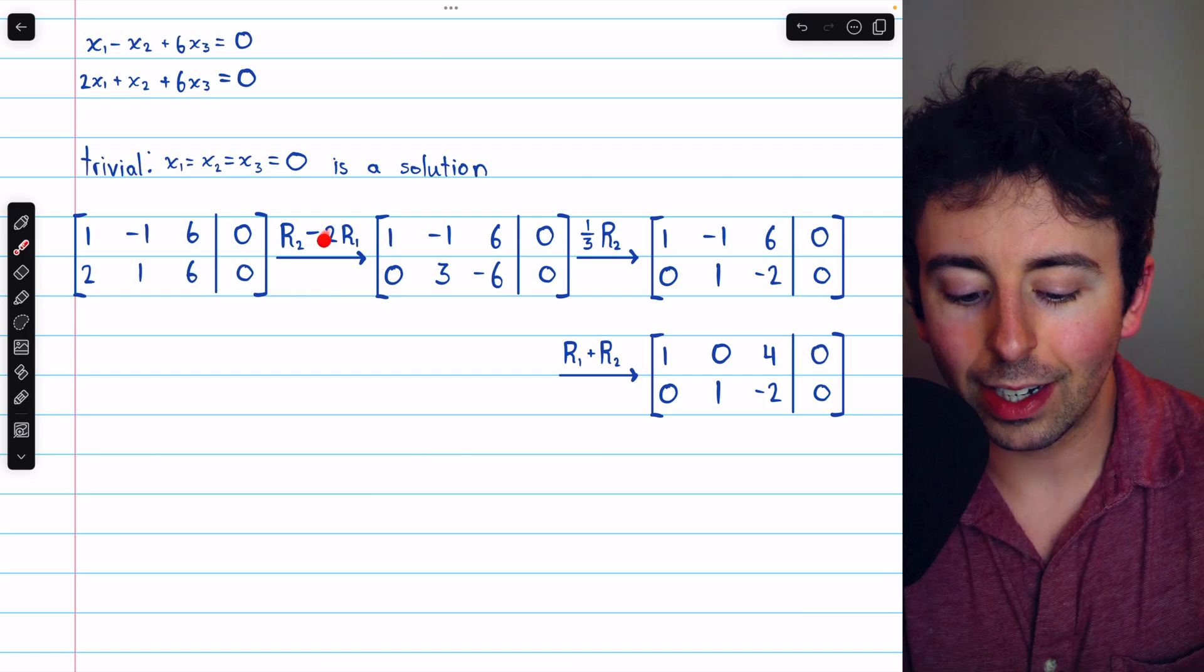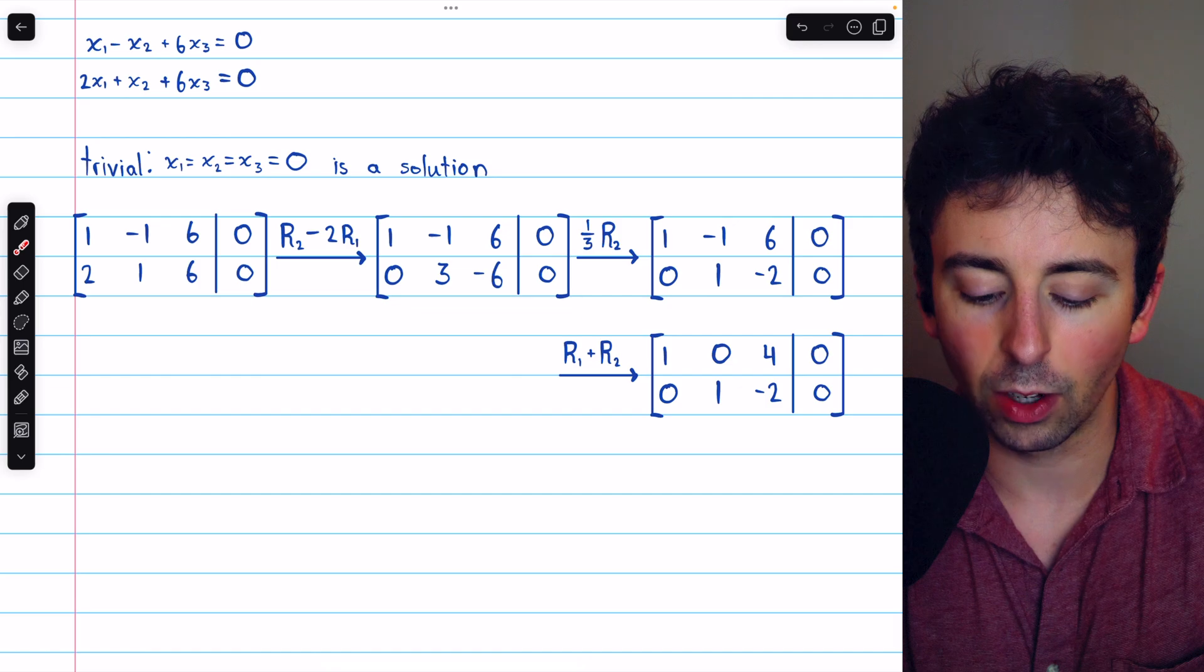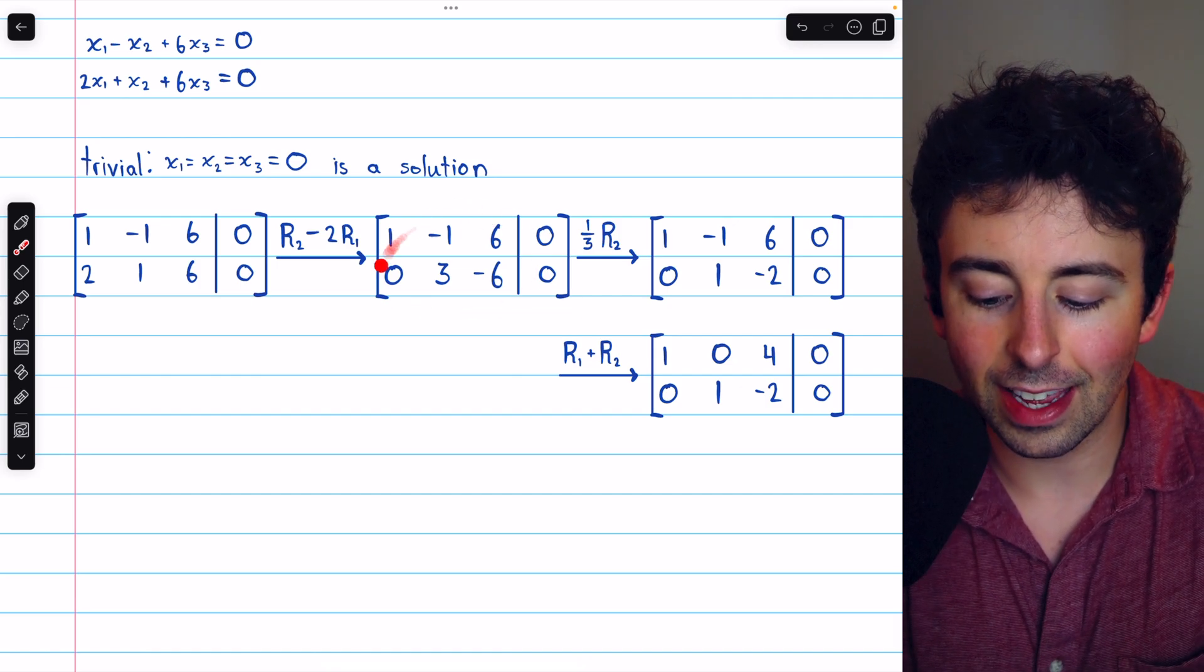We begin by subtracting two copies of row one from row two, so that this becomes a zero below that leading one. That gets us here.